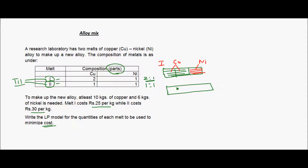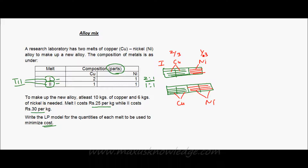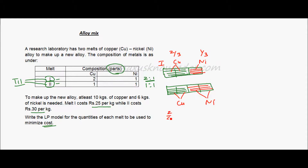For melt two, if we divide it into four equal parts, melt two has a one is to one ratio for copper and nickel. So two parts will be copper and two parts will be nickel. For melt one, copper is two out of three parts, so copper is 2/3 and nickel is 1/3. For melt two, copper is two out of four parts, which is 1/2, and nickel is also 1/2.